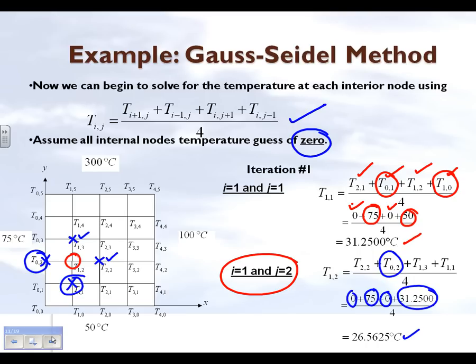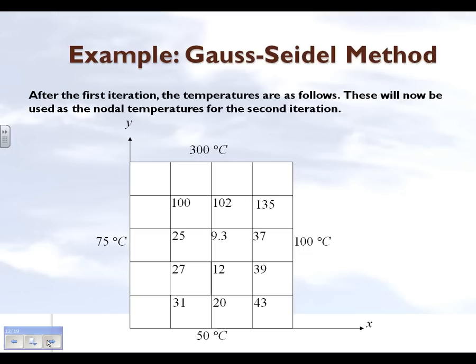You continue doing the same for the other nodes to find the temperatures at each node for the first iteration. The temperatures at all internal nodes are summarized. We need to determine whether to go for another iteration. The absolute relative approximate error at this stage is 100% for all nodes because we assumed the initial guess to be 0, so we know we must conduct more iterations.